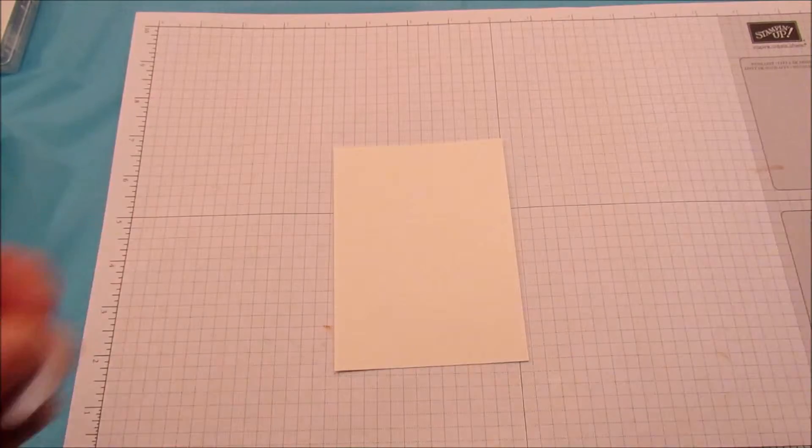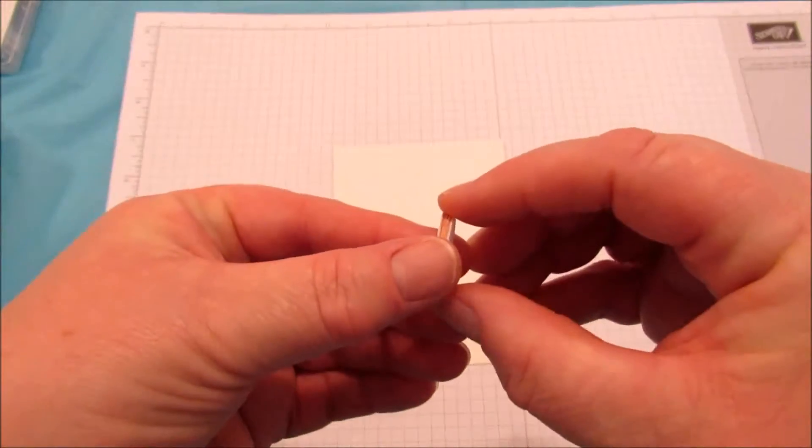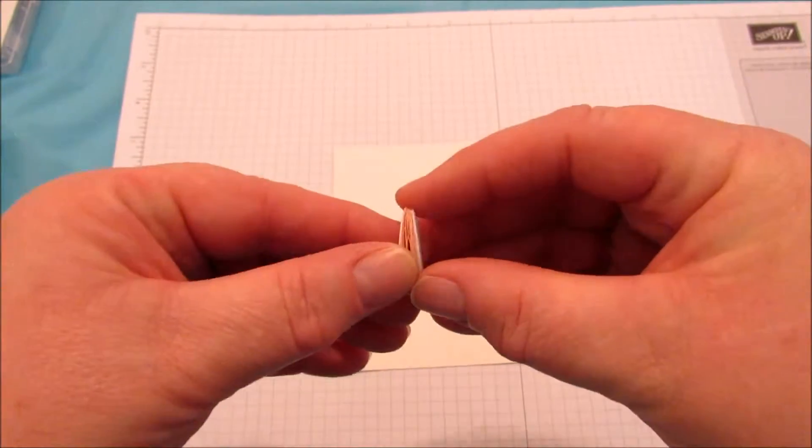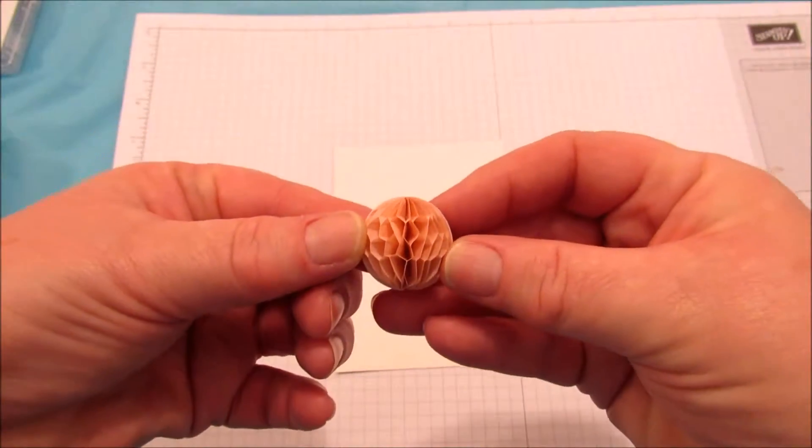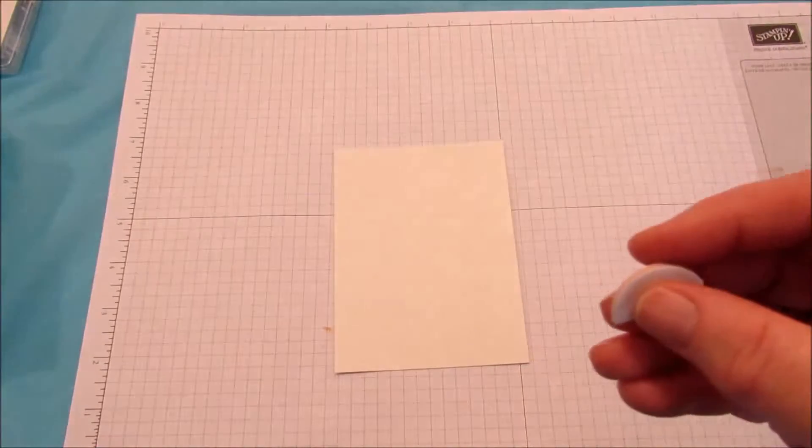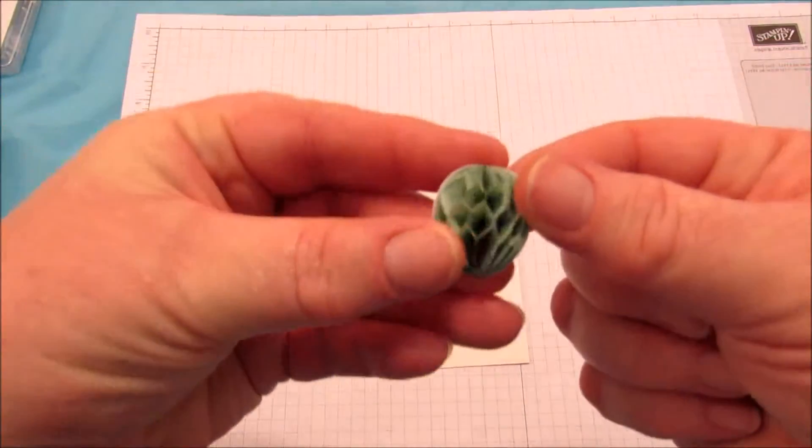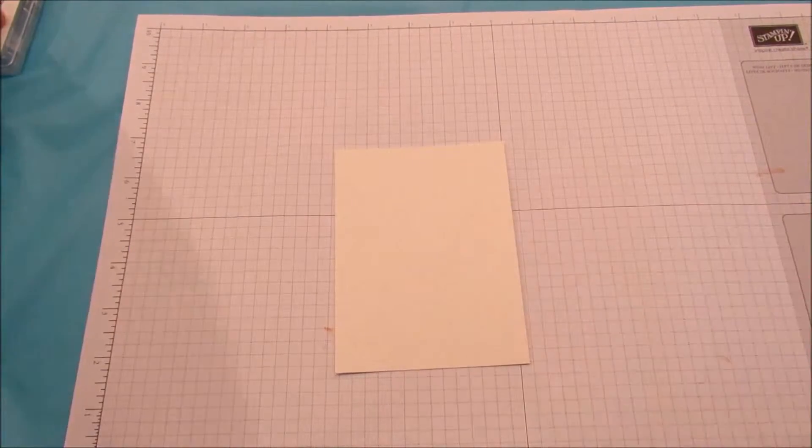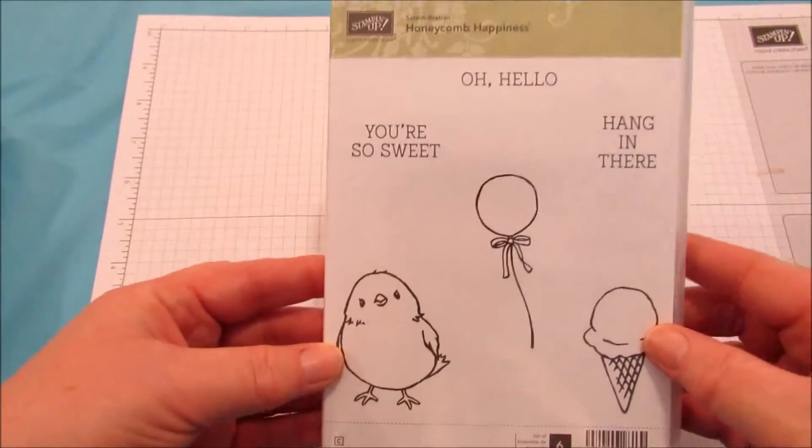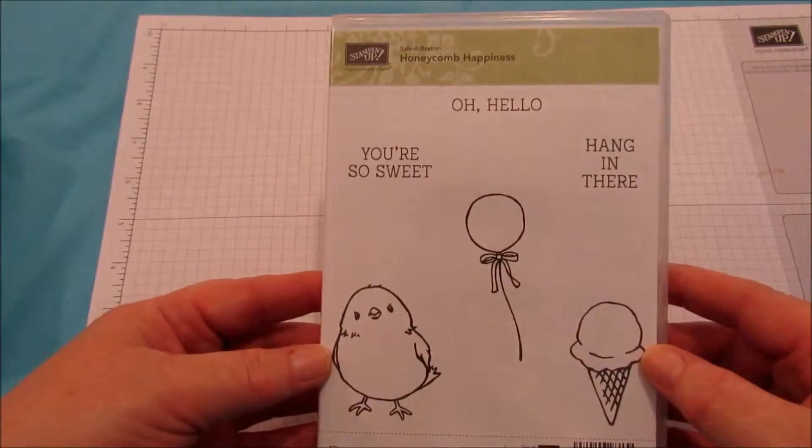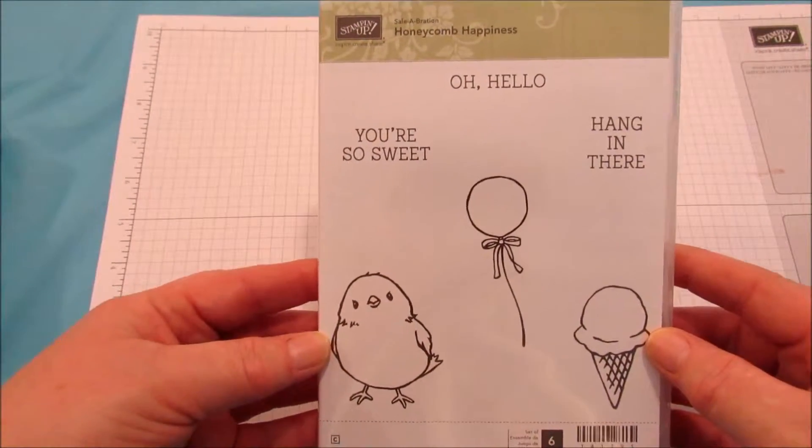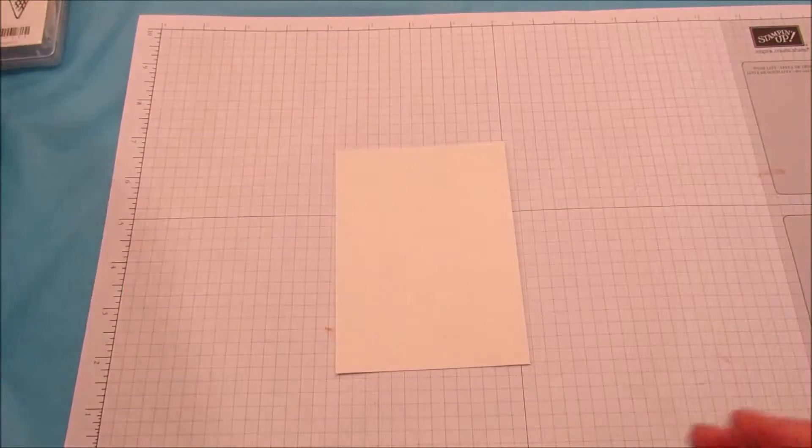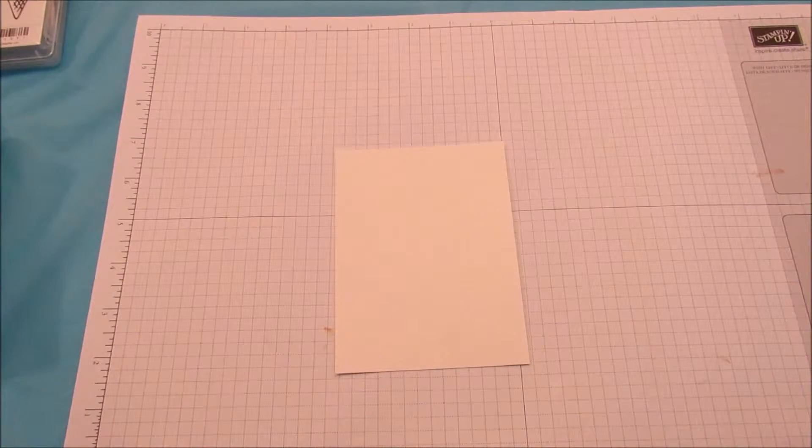And then I have two little embellishments, the honeycomb embellishments from the 2016 occasions catalog. Aren't they cute? I have them in blushing bride and mint macaron. So those are the other two items you need. And the stamp set we're using today is from Salebrations, which is available until the 31st of March. And I'm using this little chicken, and then I'm using a happy birthday. But you can put happy Easter, whatever you'd like, on the card.